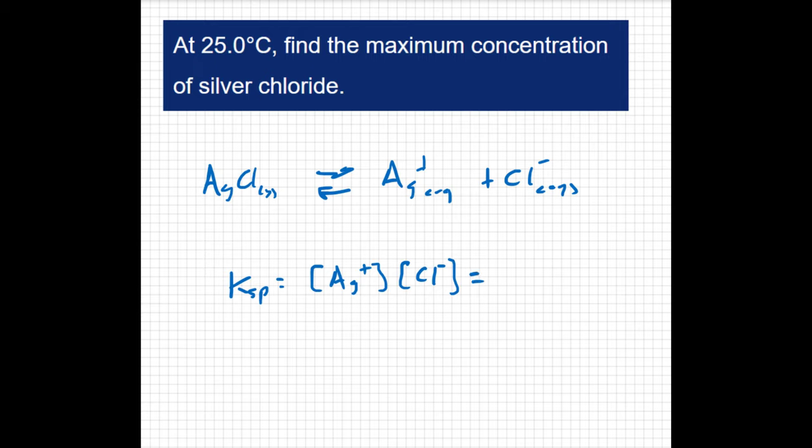And we've already looked up the Ksp value for this particular equilibrium. It's going to equal 1.6 times 10 to the negative 10. So what this question is asking for is the equilibrium concentration of silver chloride. So that's going to be X.